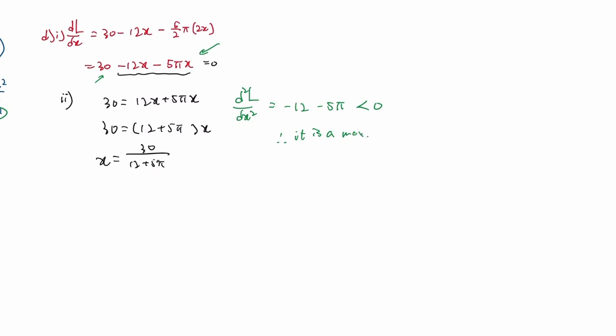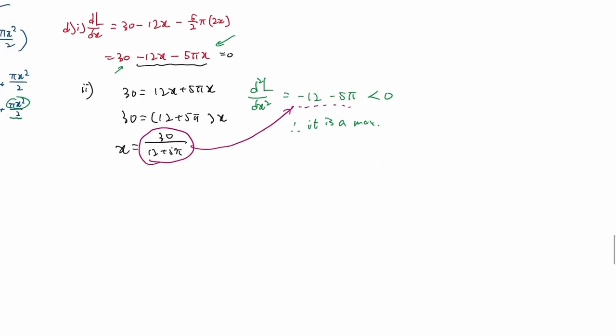Normally you need to sub in the x value into the second derivative, then say it's a negative number so it's a maximum. But this time the second derivative have no x at all, so there's nothing to substitute. So you don't have to substitute.